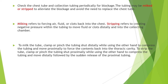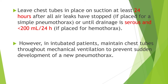An injury to the trachea, mainstream bronchus, large bronchial, or esophagus can cause a persistent air leak. A second chest tube can be inserted to manage the leak and prepare the patient for bronchoscopy or esophagoscopy to diagnose the etiology. Large or persistent air leaks usually represent proximal tracheo-bronchial injuries and may require urgent surgical intervention. Any persistent air leak should prompt a surgical consult. Check the chest tube and collection tubing periodically for blockage — the tubing may be milked or stripped to alleviate blockage. Milking refers to forcing air, fluid, or clot back into the chest; stripping refers to creating negative pressure within the tubing to move fluid or clot distally into the collecting chamber. Leave the chest tube in place on suction for at least 24 hours after all air leaks have stopped, or until drainage is serous or less than 200 ml per 24 hours if placed for haemothorax. In intubated patients, maintain chest tubes throughout mechanical ventilation to prevent sudden development of pneumothorax.